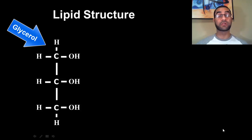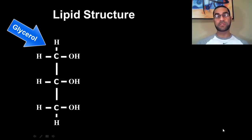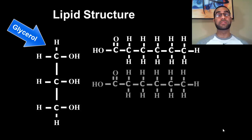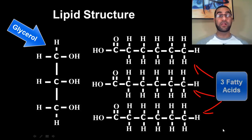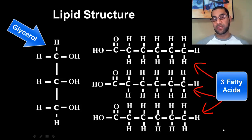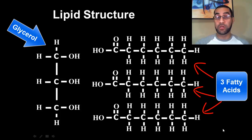They're made up of this backbone that we consider a glycerol backbone. And then there are three extensions that come off of them, and they're all what we consider fatty acid tails. Each of these extensions is a fatty acid tail or a fatty acid chain. The whole lipid molecule is made up of a glycerol backbone — the vertical line — and then three fatty acid extensions or fatty acid tails that come off of them. When you combine all of this together, that forms your lipid molecule.